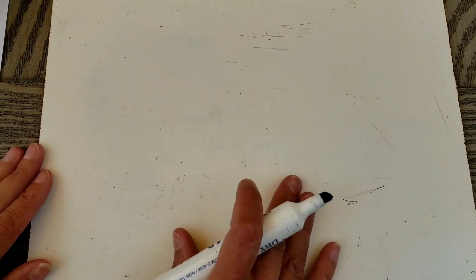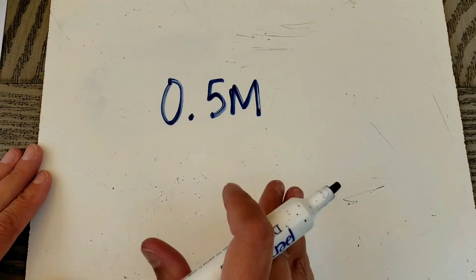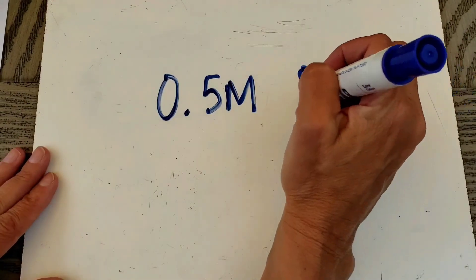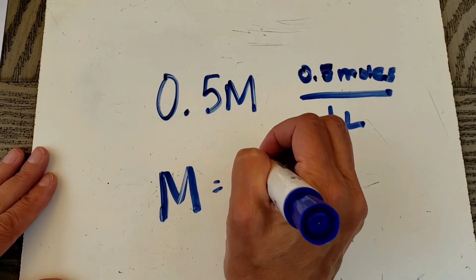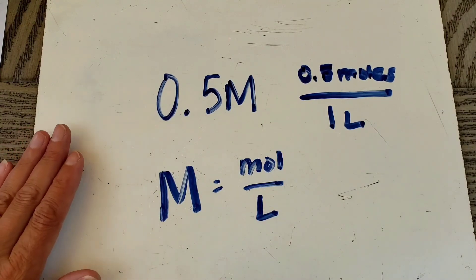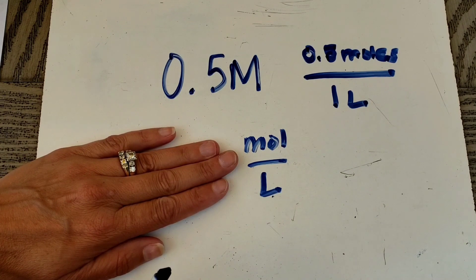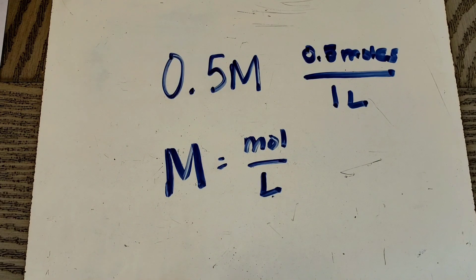One thing I want to make sure we understand before we start solution stoichiometry is what molarity really means. If I have a 0.5 molar solution of anything, that means there are 0.5 moles of solute per one liter of solution, because molarity means moles per liter. I can look at molarity not as a big M but as moles per liter, and use it as a conversion factor to solve for moles, liters, or molarity — just like molar mass or molar volume.